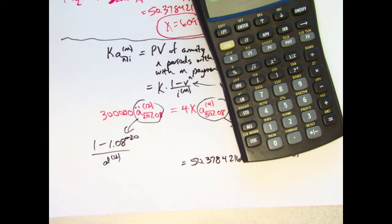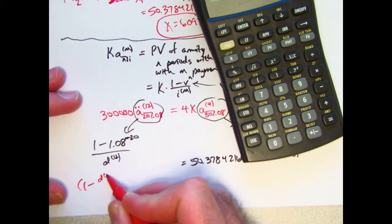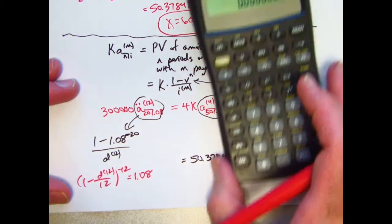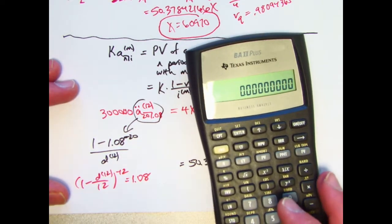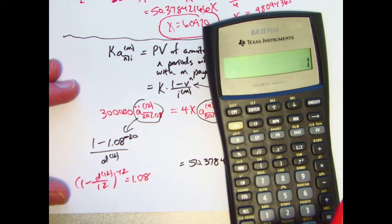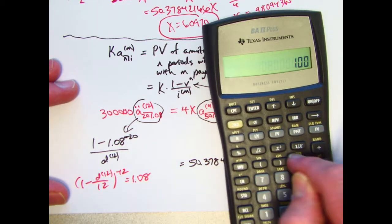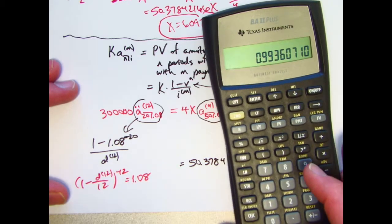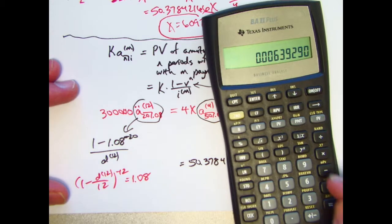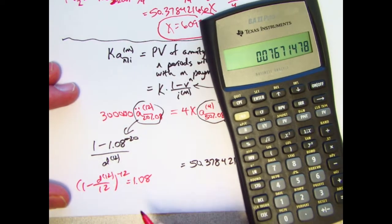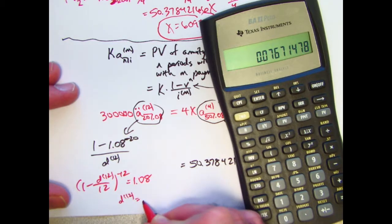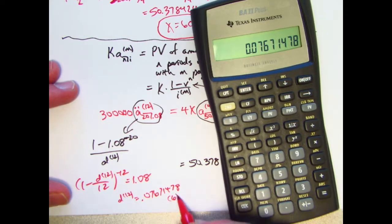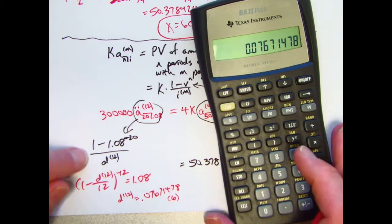The key equation for finding D12 is that 1 minus D12 over 12 to the negative 12th power should be 1.08. So, I'll take, to solve for D12, take 1.08, raise it to the negative 1 12th power, power 0.083333333 negative. Then, I'd need to subtract that from 1, and then multiply both sides by 12. Looks like D12 is 0.07671478. I'll store that in register 6.